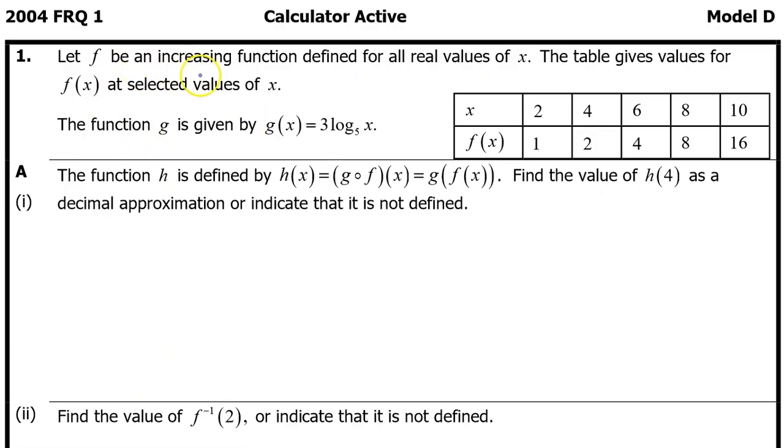Let f be an increasing function defined for all real values of x. The table gives values for f of x at selected values of x. The function g is given by g of x equals 3 log base 5 of x.